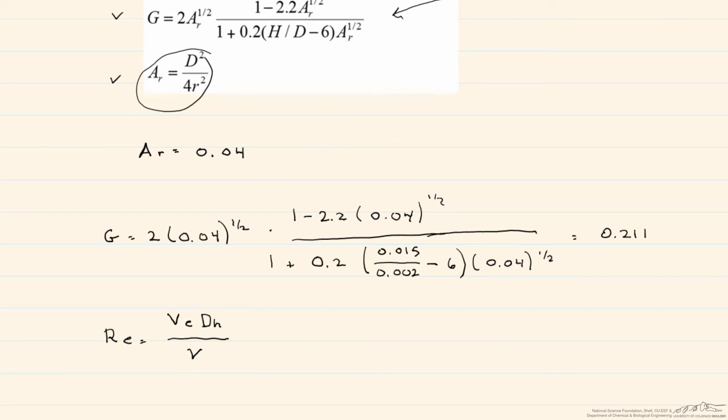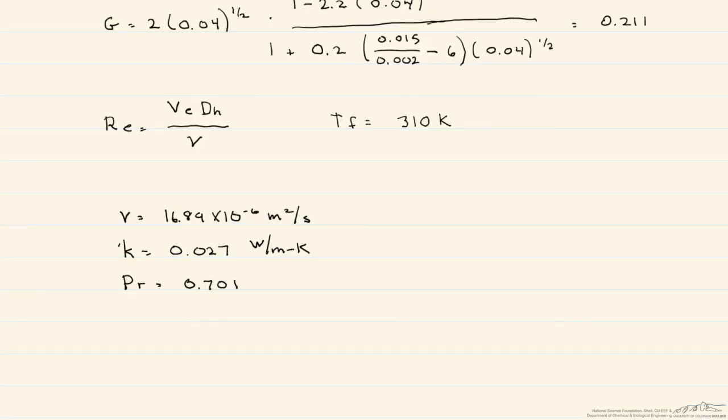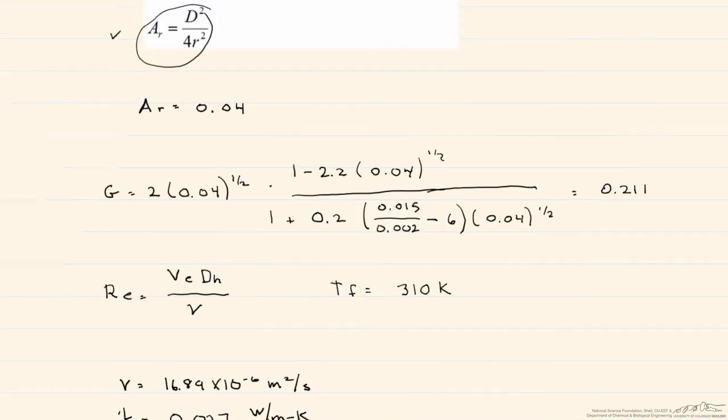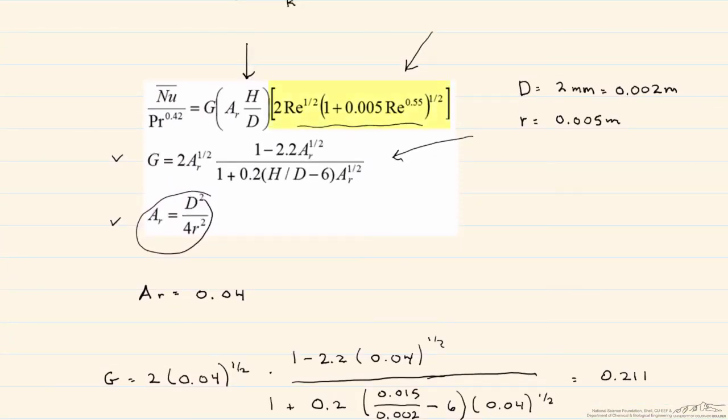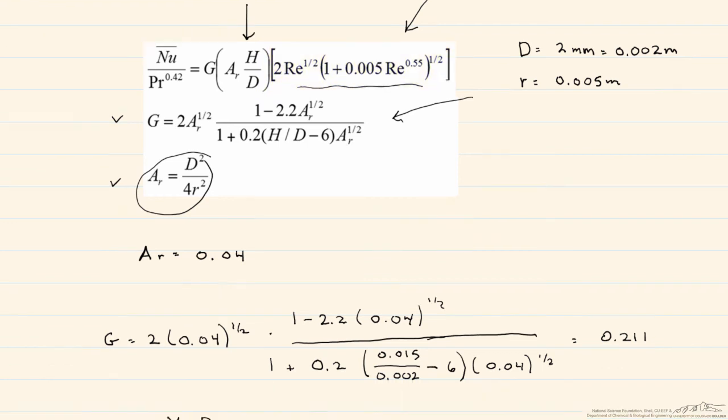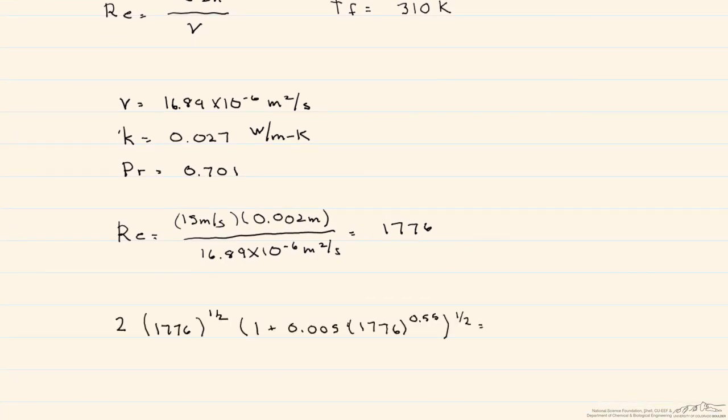To find the Reynolds number, we need to look up properties at the film temperature, which is T surface plus T exit divided by 2 in Kelvin. We don't know what the surface temperature is, but we'll assume it's around 65 degrees, so our film temperature is 310 K. When we calculate the Reynolds number, we get 1776. Now we calculate this third part that's solely dependent on the Reynolds number, and we get 96.3.